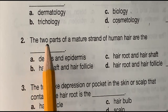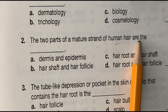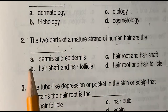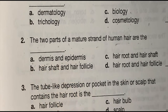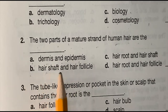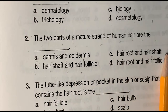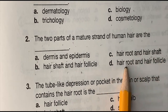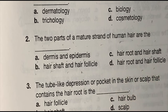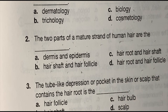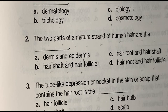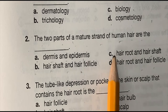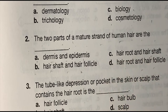Number two: the two parts of a mature strand of human hair are the blank — (a) dermis and epidermis, (b) hair shaft and hair follicle, (c) hair root and hair shaft, or (d) hair root and hair follicles. The correct answer is (c) hair root and hair shaft.